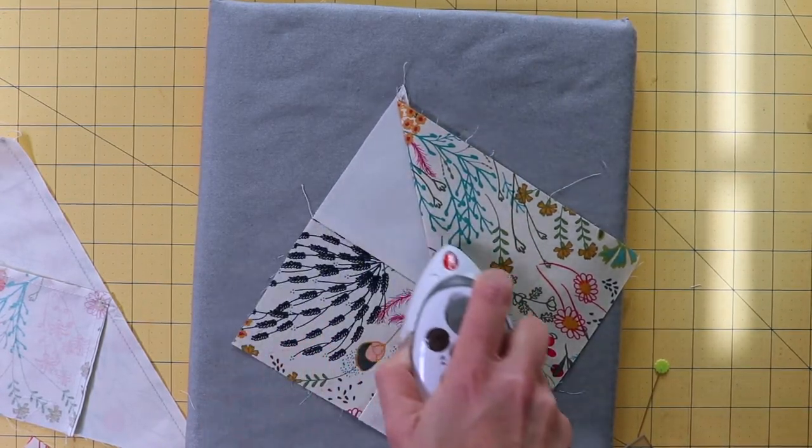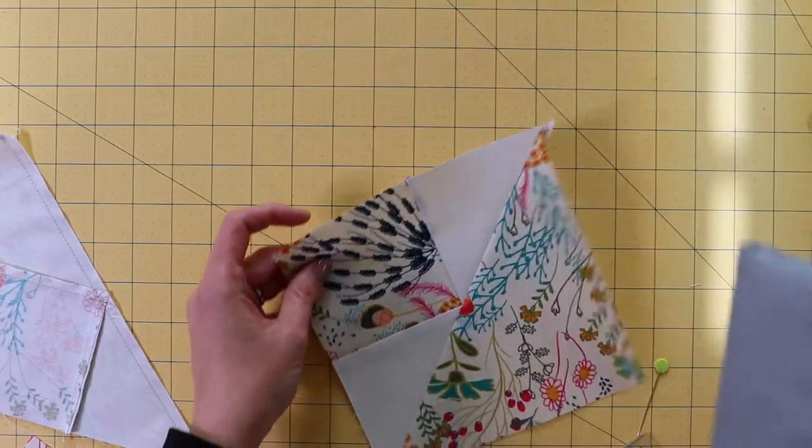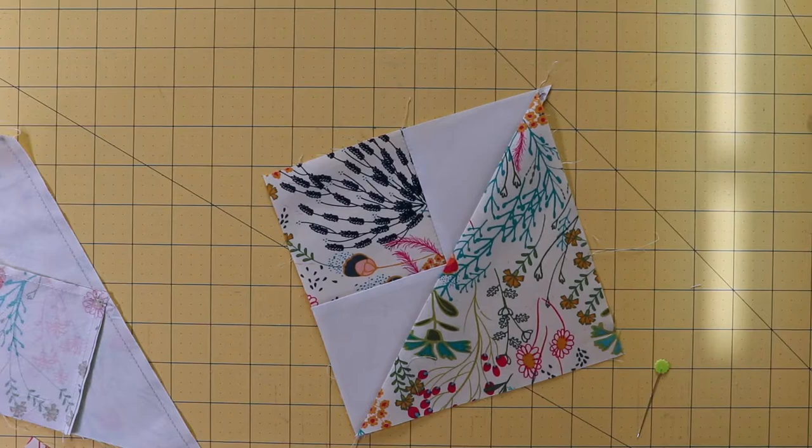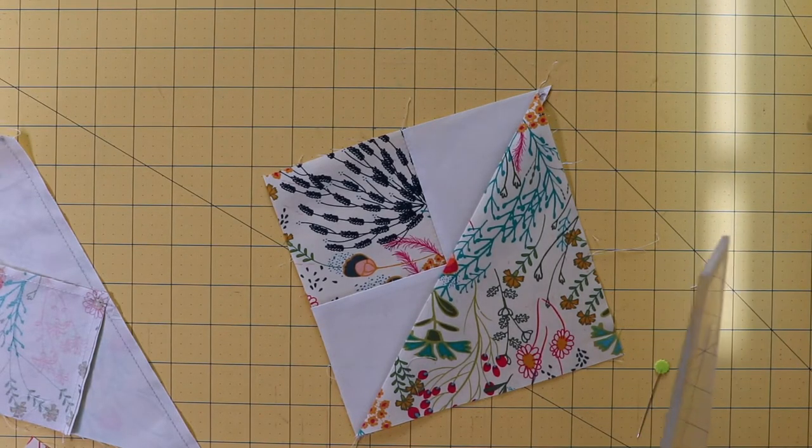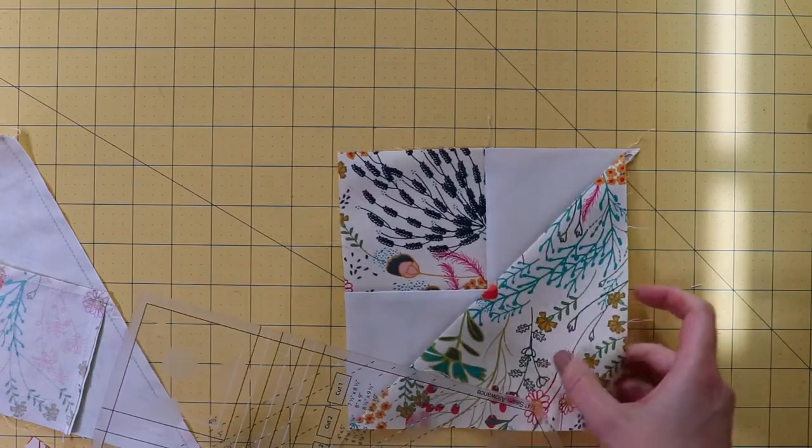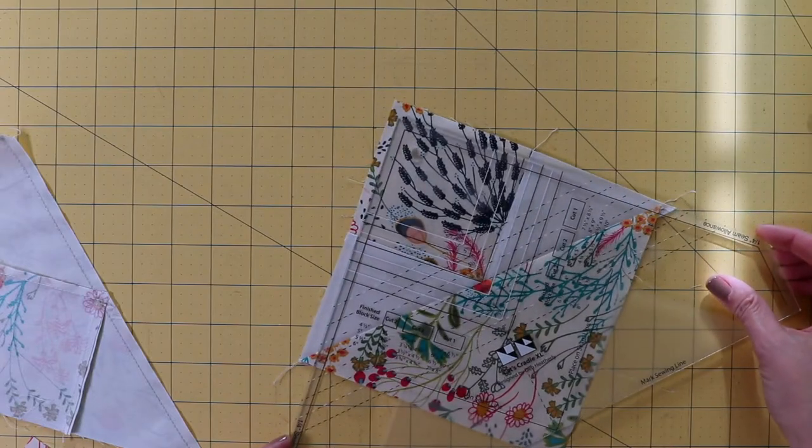However, we need to trim it just a little bit more. So then, we're going to go back to our ruler, and we're going to use this to give it a good trim. So essentially, we're doing the 6 inch one. So I'm going to line the 6 inch.